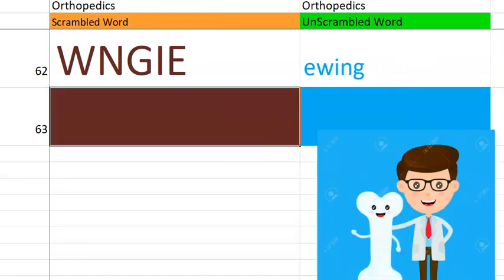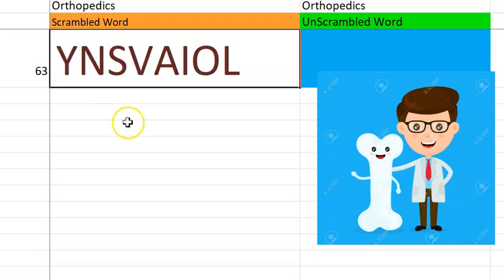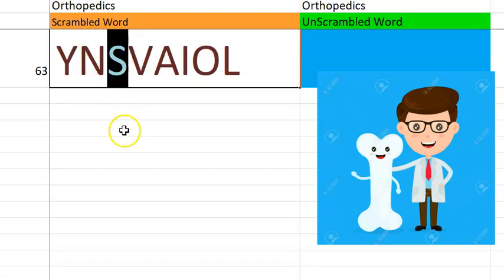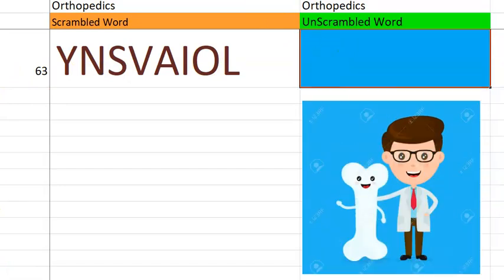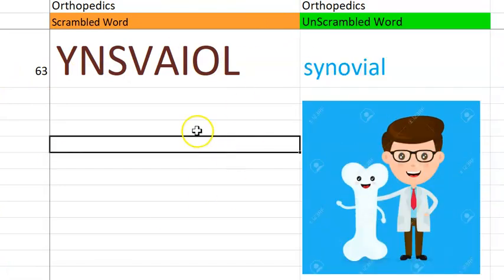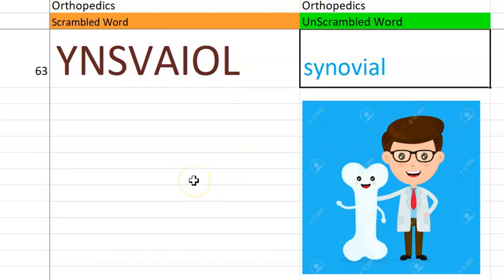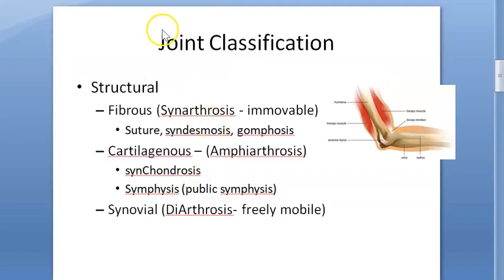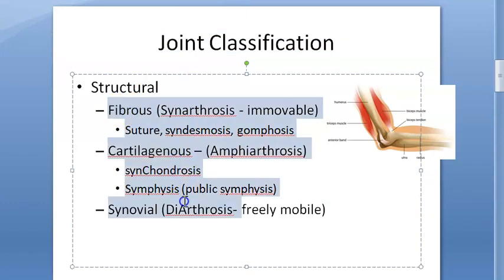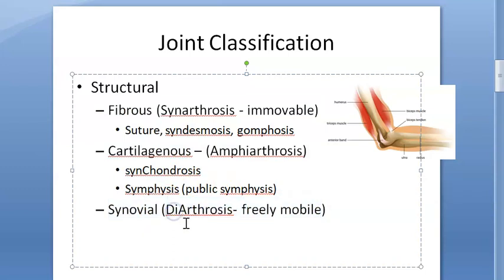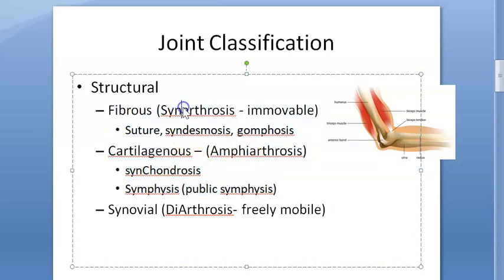Last one guys, 63rd one. It's just a type of joint — S joint space. Synovial joint. What are the types of joint? You have fibrous joint, cartilaginous joint, and synovial joint. Synovial joints have free mobility, so they are called diarthrosis. Cartilaginous are not so mobile but not so fixed — they are amphiarthrosis. And fibrous are immovable — they are synarthrosis.